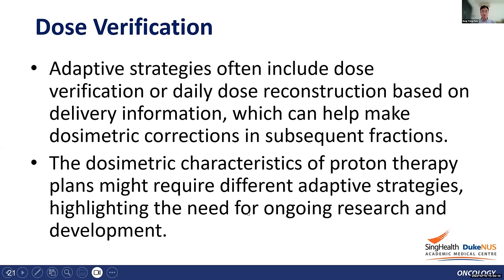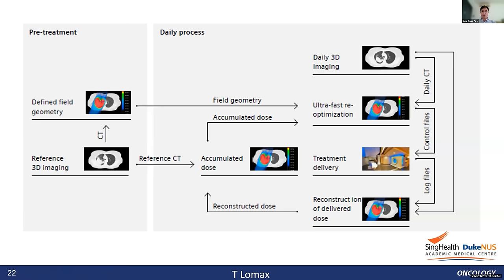This is a typical workflow for online adaptive therapy with in-room CT. From a pre-treatment stage you generate a plan from reference 3D imaging. On each daily process using in-room CT, you compare the daily imaging, perform ultra-fast re-optimization and dose calculation, and deliver the treatment beam to the patient. From the log file you reconstruct the ion delivery dose to calculate accumulated dose, ensuring what dose will be expected for this patient.